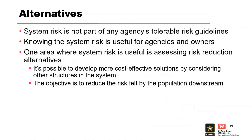System risk is not currently part of any agency's tolerable risk guidelines — we manage portfolios based on individual risk. However, knowing the system risk is useful, particularly for assessing risk reduction alternatives. It allows us to develop more cost-effective solutions to reduce the overall risk felt by a population by considering other structures in the system. Our ultimate goal when reducing risk is to reduce it for that population as much as possible, since a certain population feels risk from multiple structures at once.